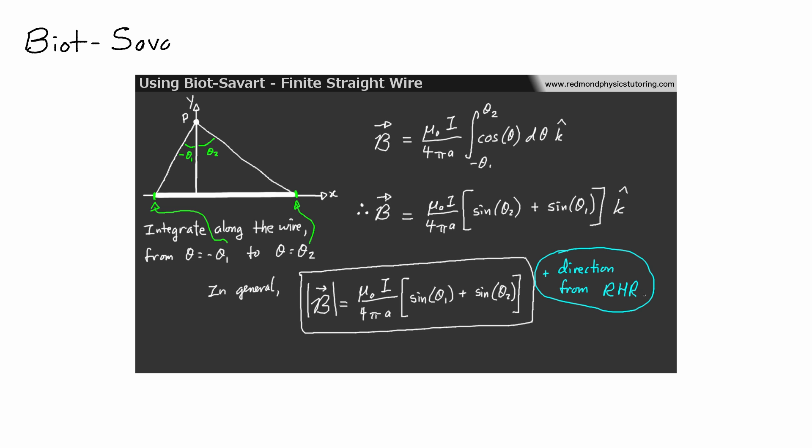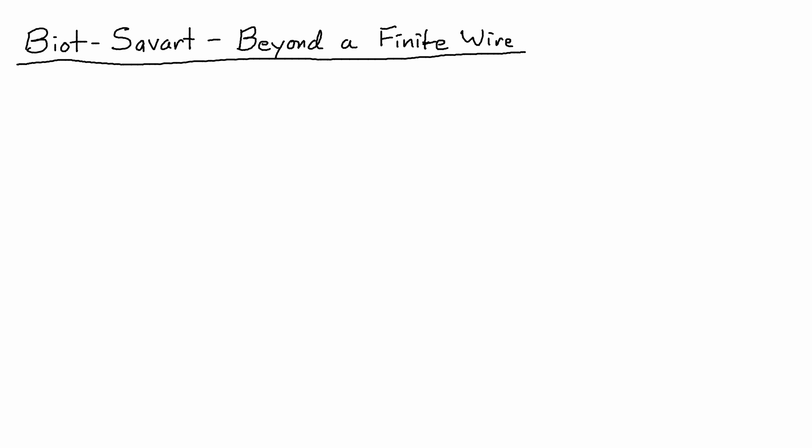So the question that came up was, what do you do when point P is beyond the end of the wire? If you remember the formula that was derived in that video, or if you look at the formula that we derive in class, we usually have a finite wire, and it has a certain length, and we're looking at the magnetic field at point P.